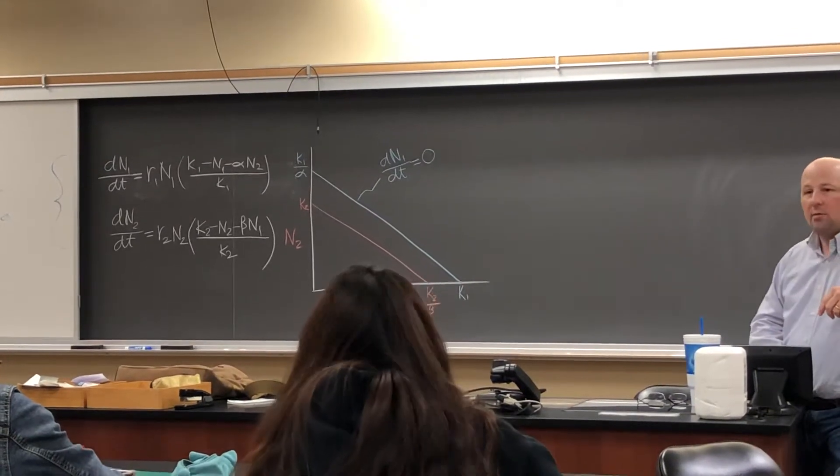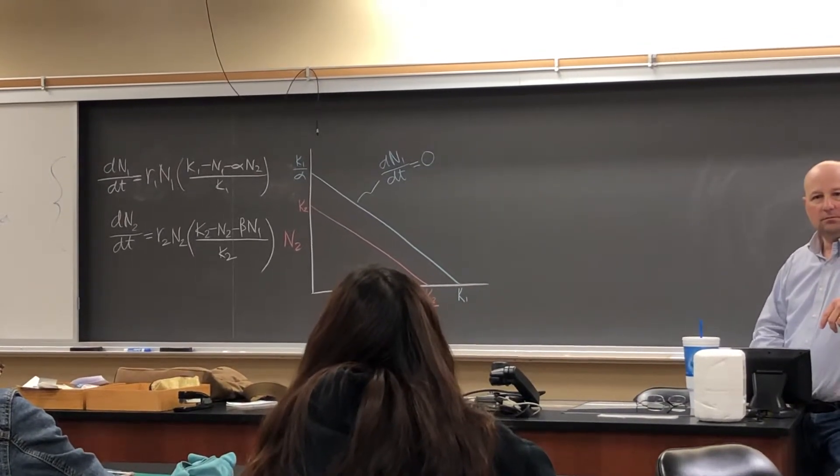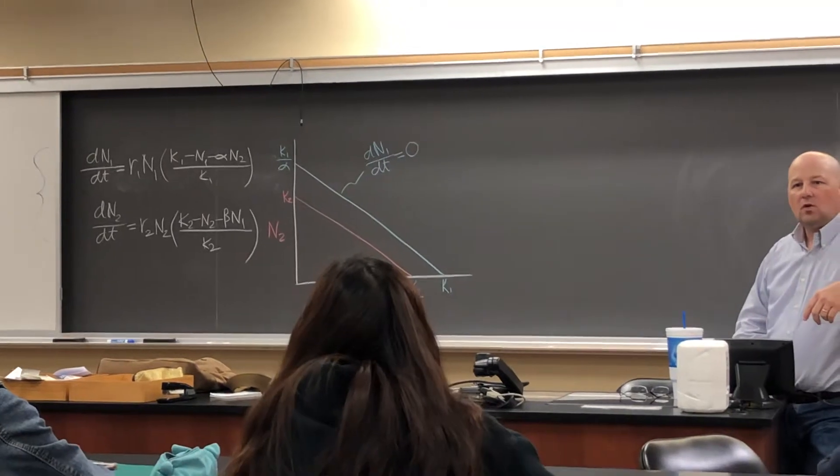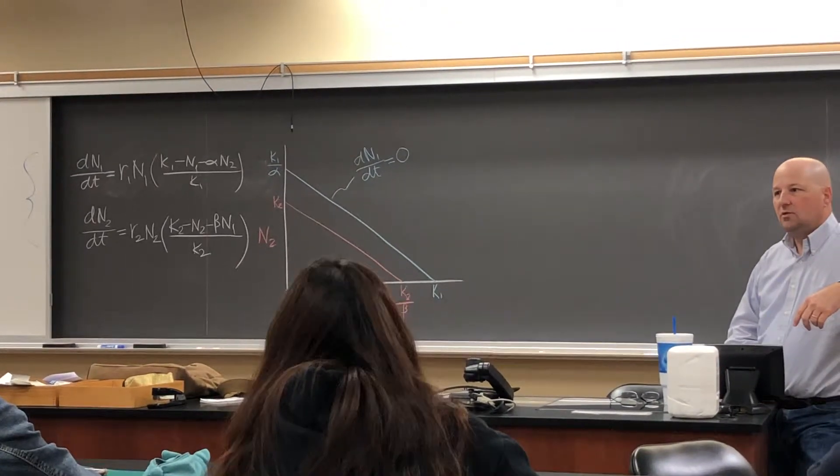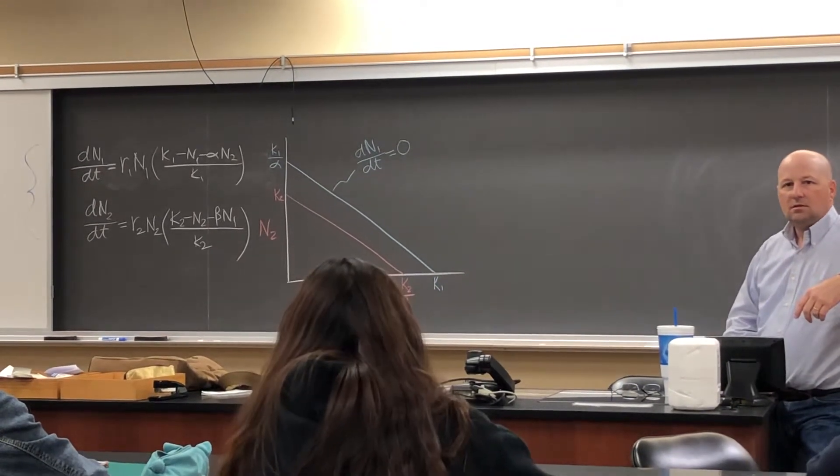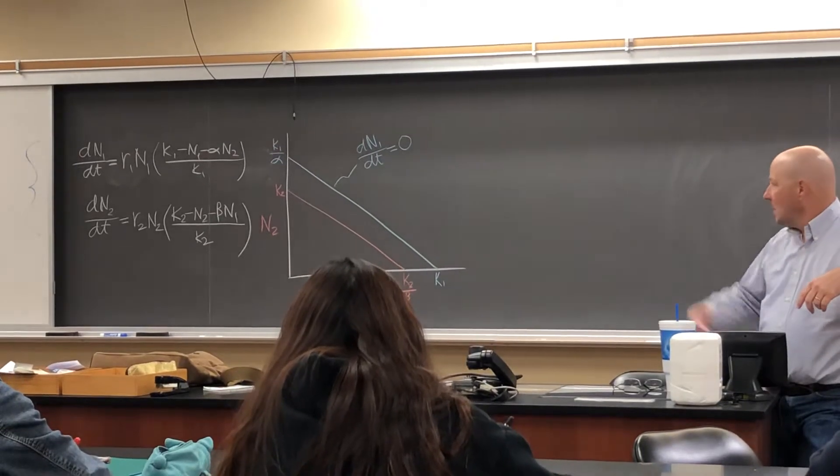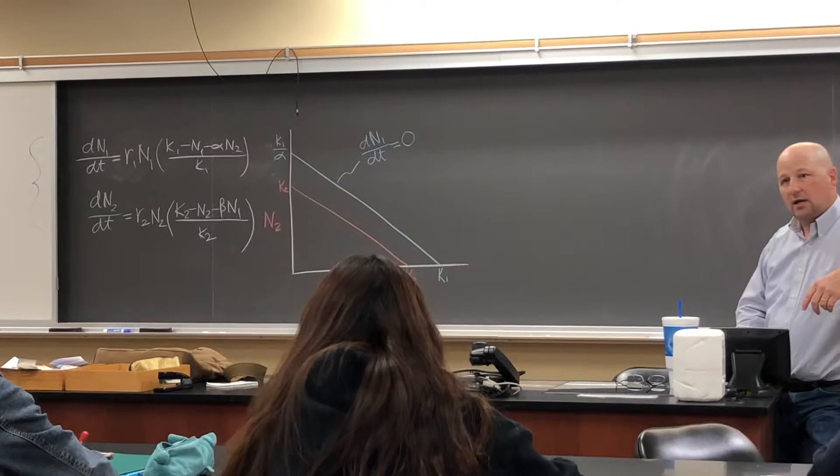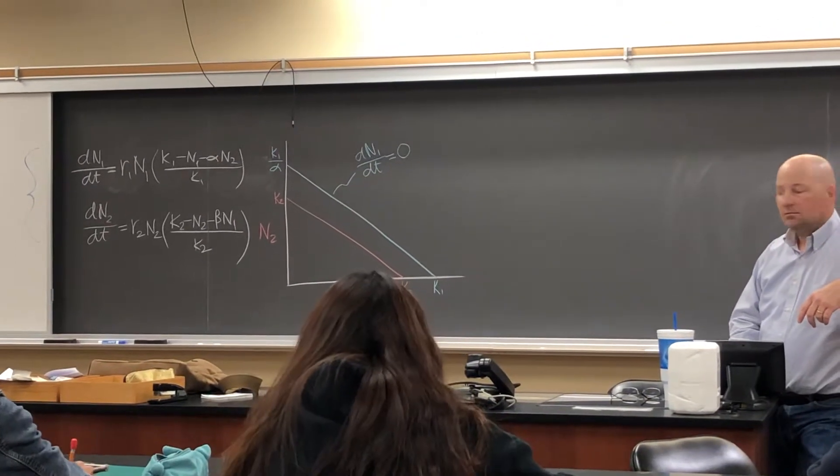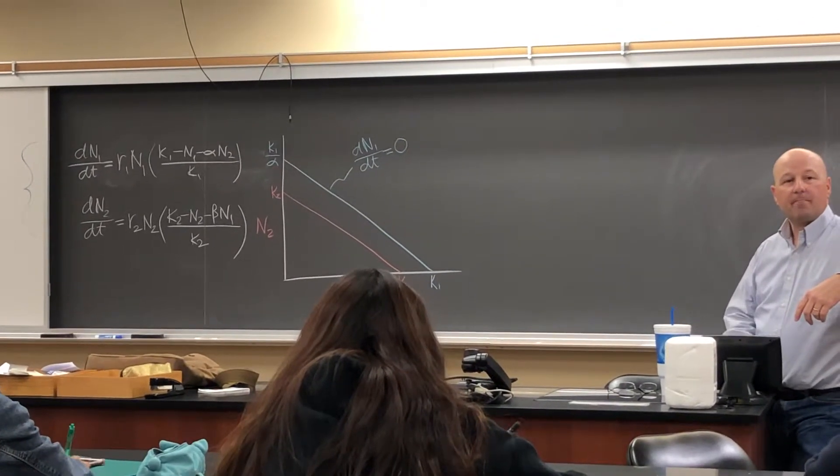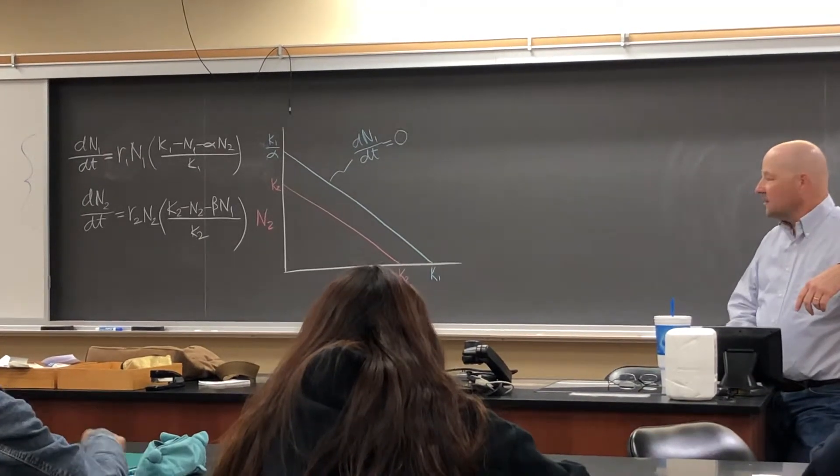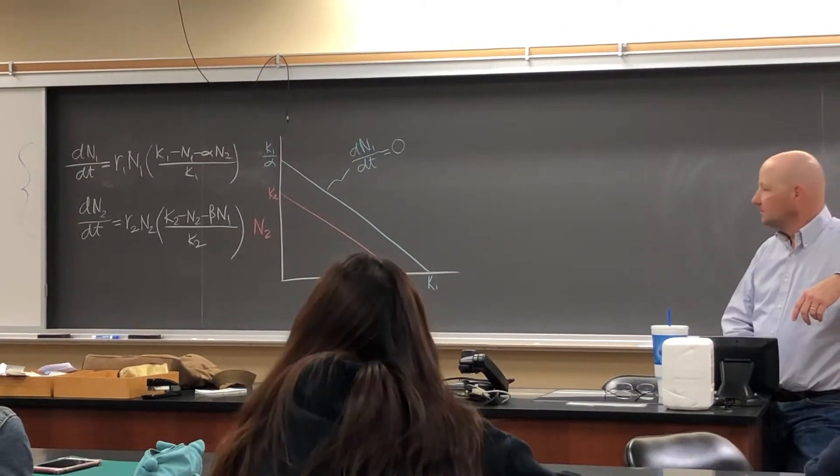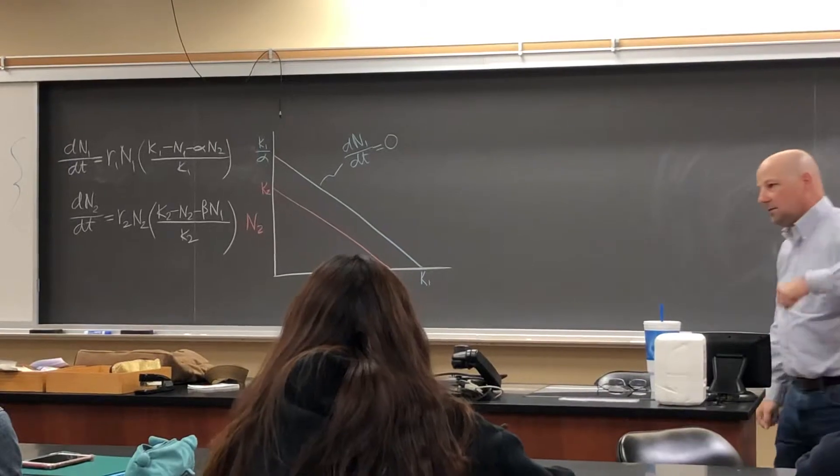Who wins? Who loses? Where on the graph again? No, just what does this graph represent? Who wins, who loses in this particular case? It depends on the situation, no? Oh, this particular case. You mean dN1 over dt equals zero? Species one or species two? Who wins? Species one. Species one. Yes.